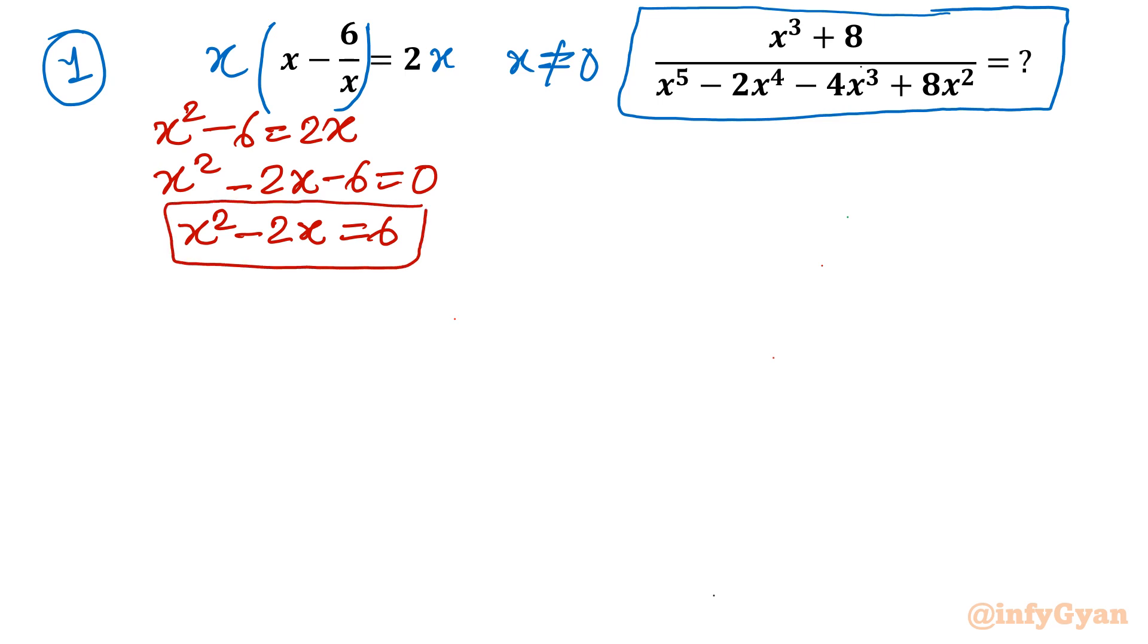Now come to our numerator. The expression's numerator is x cube plus 8. So it is x cube plus 2 cube. So one identity I will write now which is a cube plus b cube. So let me write the formula first. a cube plus b cube formula is a plus b in one bracket, and in second bracket we will write a square plus b square minus ab.